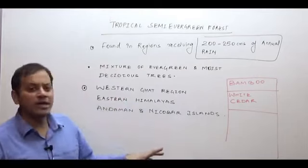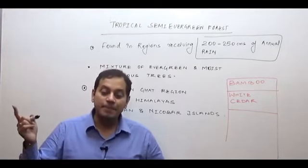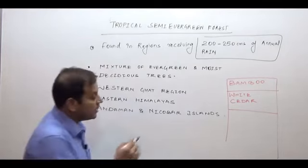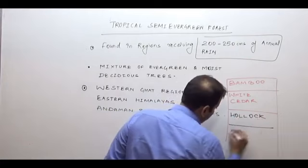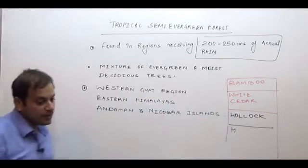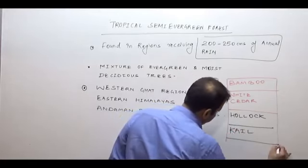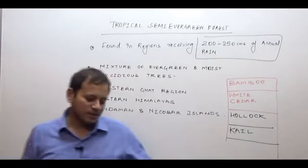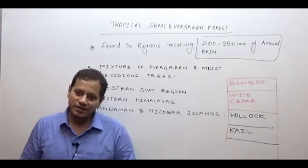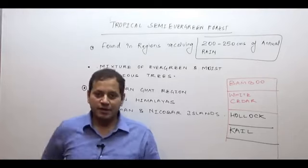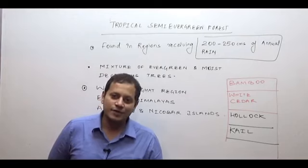To remember the species: rosewood, mahogany, ebony — these species ending with a Y sound — belong to the evergreen forest. White cedar belongs to the semi-evergreen forest. Also in semi-evergreen: hollock and kail. Bamboo can grow in both deciduous and evergreen regions, so bamboo is present everywhere. White cedar, hollock, and kail are specifically semi-evergreen species.